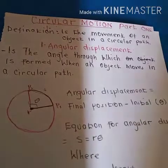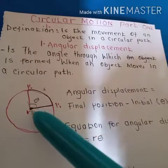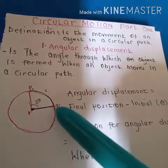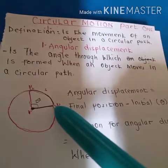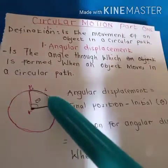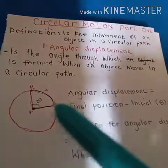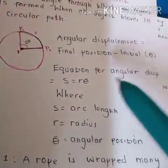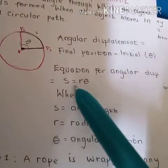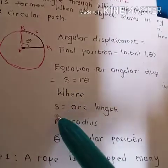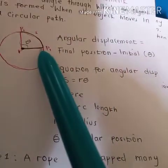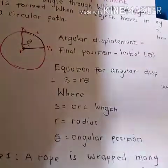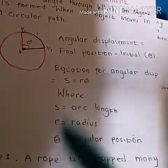Angular displacement is the final position minus the initial position of an object. The equation for angular displacement is S equals r theta, where S is the arc length, r is the radius, and theta is the angular position.